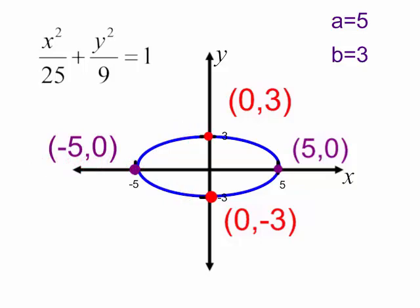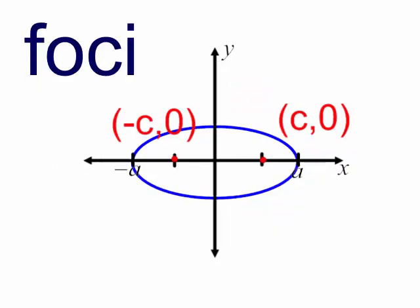But let's talk more about this ellipse. We have talked about a's and b's. Well, let's talk about c, which deals with the foci. So if I have a horizontal ellipse, my foci will be on the x-axis.